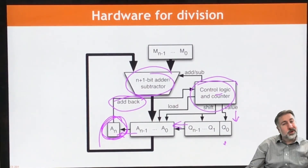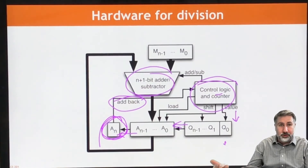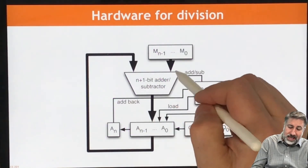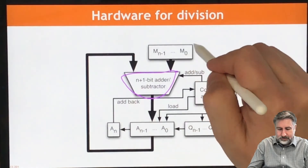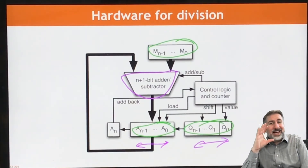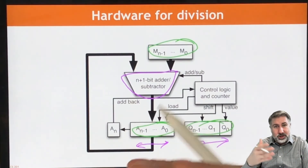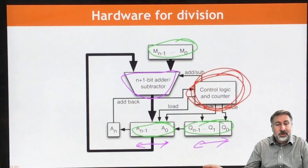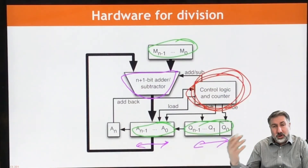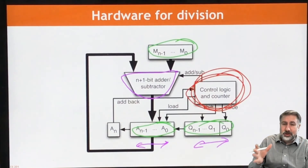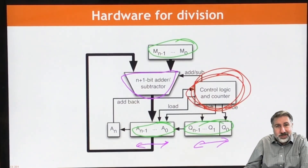Because the base hardware is more or less the same, we could build a single device that does both multiplication and division. We need an adder-subtractor rather than just an adder. The registers are the same, although now they have to shift in both directions. So as long as we add an adder-subtractor and allow the registers to shift in both directions — which we already know how to do — it's simply a matter of rebuilding the control logic to allow it to do either division or multiplication. The number of times through the cycle is the same, the shifting is the same; it's just whether we subtract and shift left or add and shift right.